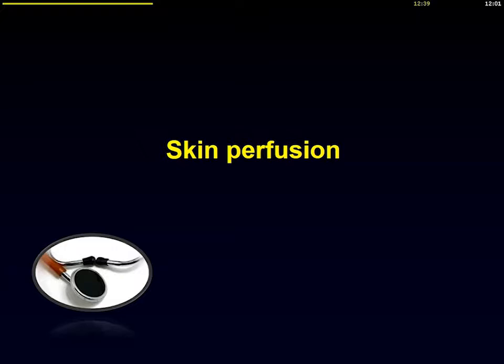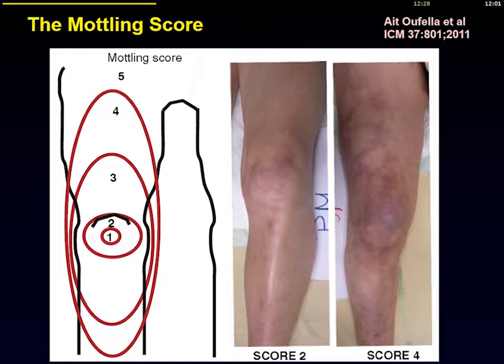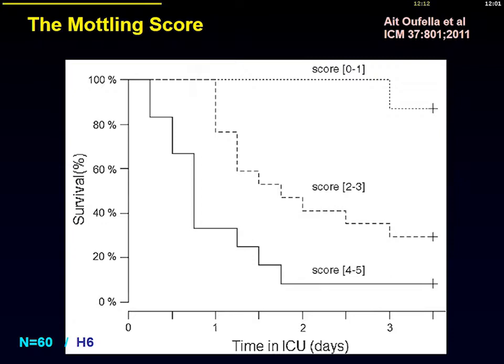Skin perfusion is an important sign. Looking at patients with skin involvement, some have used scoring systems, because the extent of mottling around the knee is associated with poor outcome. The higher the extent of mottling, the higher the mortality. A limited area of mottling is not good, but it's better than having an extended area of mottling in your patients.